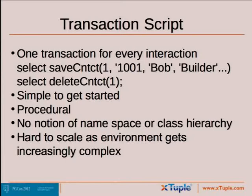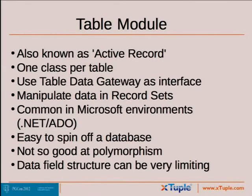We've got over a thousand functions like this in our database. The reason this is attractive is it's simple to get started procedurally, and when we started the company years ago this is what we went with. But there's no notion of a namespace or class hierarchy, and when the application starts to get larger this sort of thing is really hard to scale — it's challenging to manage thousands of different transaction functions. For quite a while I was wanting to pursue the table module approach, which in the Microsoft world is called active record, and I think it's popular in the Ruby world too.